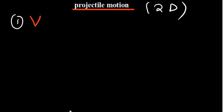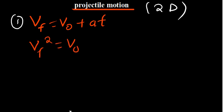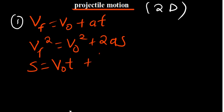Let's try to show where the equations come from. The equations that we've been working with under linear motion are these three: first, final velocity equals initial velocity plus acceleration times time (V = V₀ + at); second, final velocity squared equals initial velocity squared plus 2As, where S is distance or displacement; and third, S equals V₀t plus ½at², where A is acceleration and T is time.